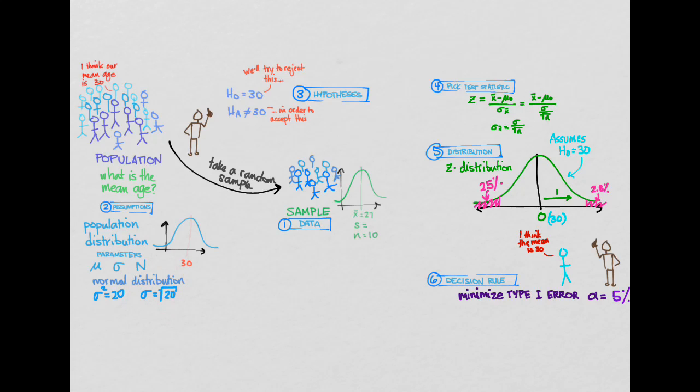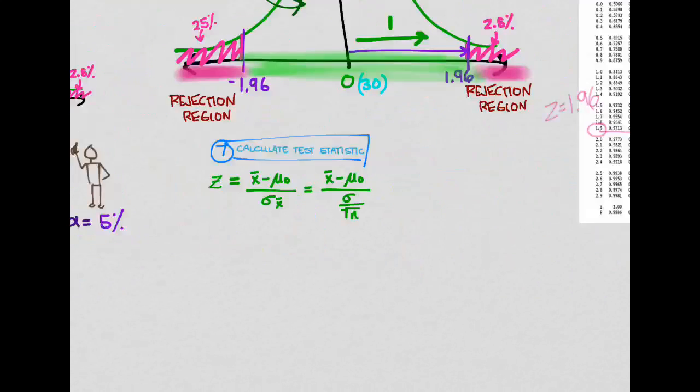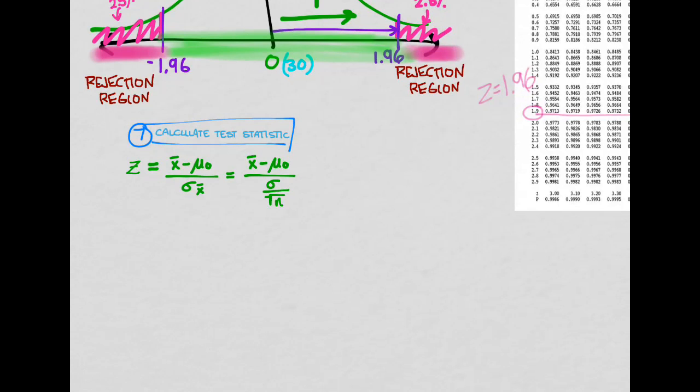And do we have the sample size? And yes, we do. It's 10. So we have everything we need to calculate this. So let's just plug in those numbers then. So we remember that X bar was 27 minus the hypothesized mean, which was 30, over sigma, and I believe that was the square root of 20, divided by the square root of the sample size, which is 10. So we've just got to calculate what that comes out to. And if you use a calculator, you're going to get negative 2.12.